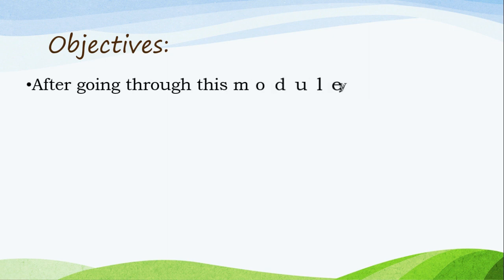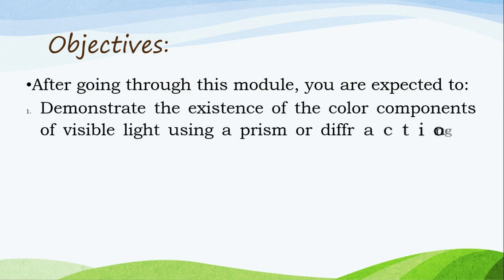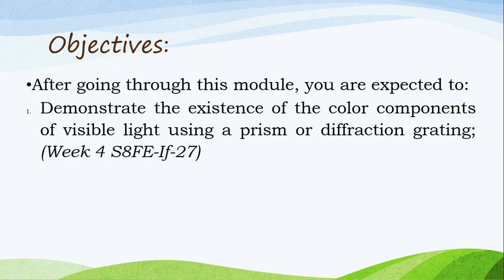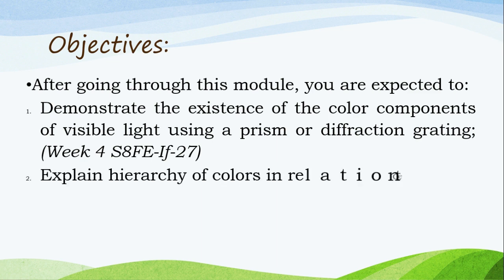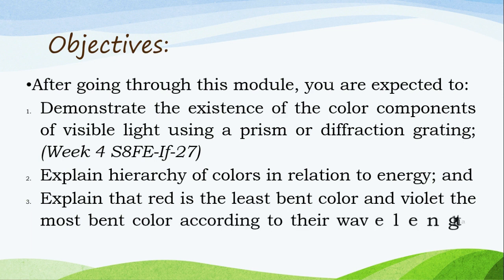After going through this module, you are expected to: Number 1, demonstrate the existence of the colors and components of visible light using a prism or diffraction paper. Number 2, explain the hierarchy of colors in relation to energy. Number 3, explain that red is the least bent color and violet the most bent color according to their wavelengths and frequencies.